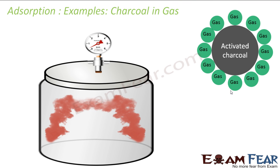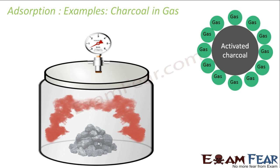The next example is charcoal. Charcoal adsorbs gases such as oxygen, hydrogen, carbon monoxide, chlorine, and ammonia. To demonstrate this, we take a gas — let's assume chlorine gas — in a closed vessel. The gas exerts some pressure; note that pressure. Now we introduce charcoal into the vessel, and you will see the pressure decrease gradually.